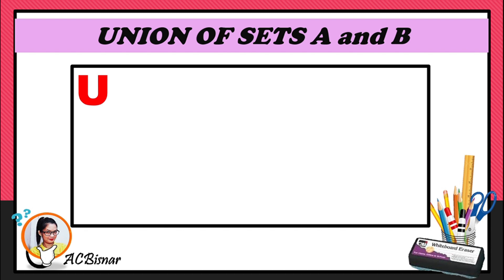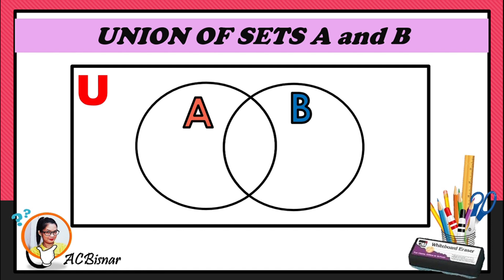To illustrate set A and set B, we're going to use two circles. These two circles are where the elements are written — the elements of A in one circle and the elements of B in the other. These two circles overlap only if there are common elements between A and B.